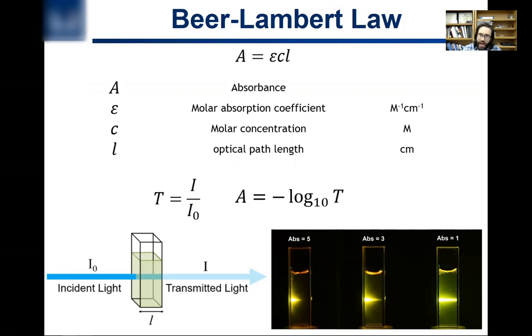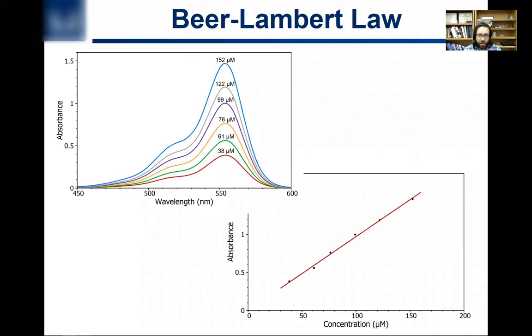So if you have a dye, you want to have a very high absorption coefficient so that you only need a very little amount of it to make a very deep, beautiful color in like clothing.